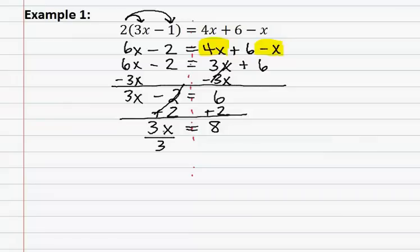Remember, we use division because it's the opposite of multiplication. This results in x equals eight-thirds, and that is our answer to example one.